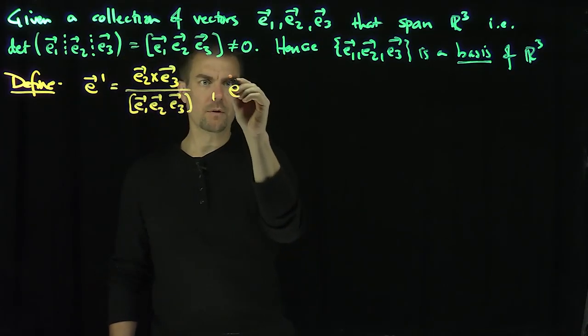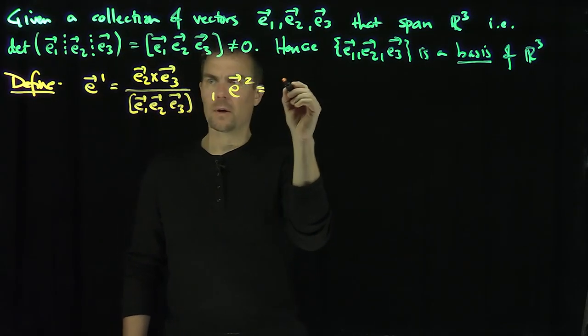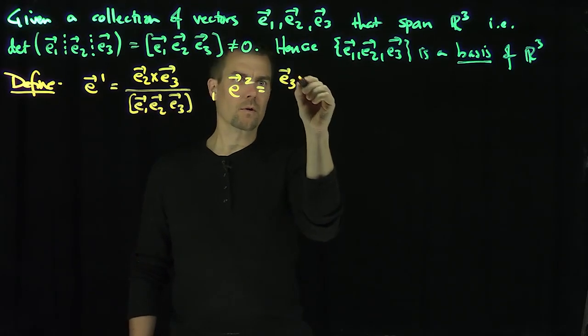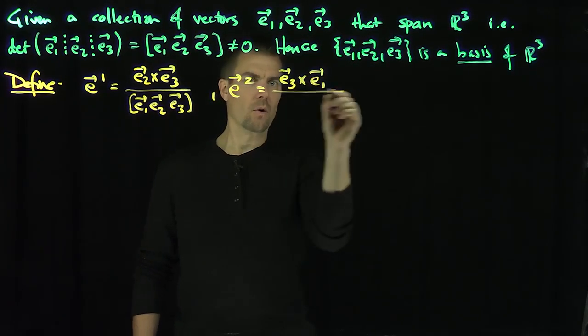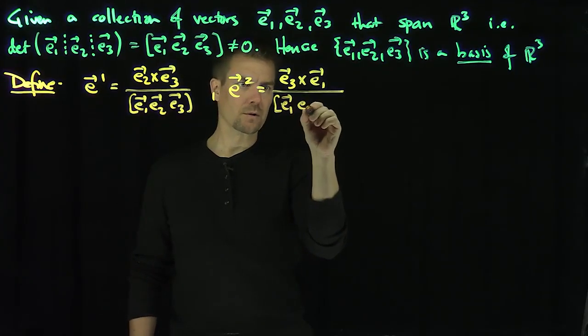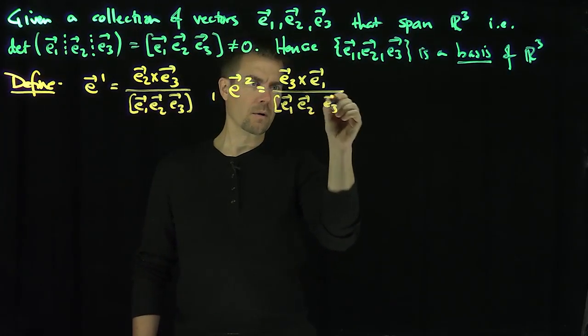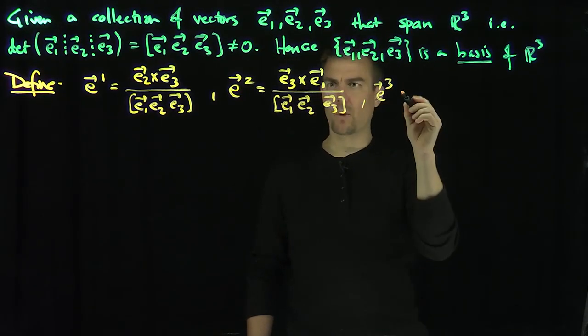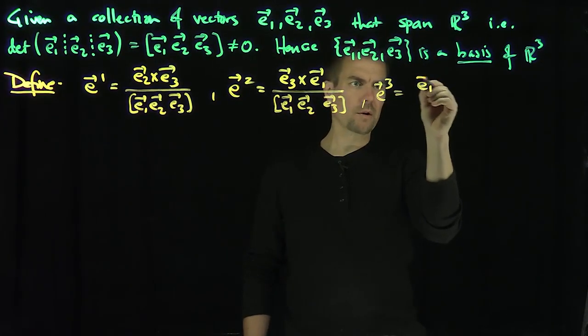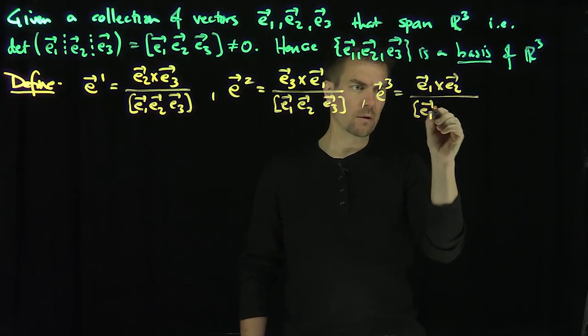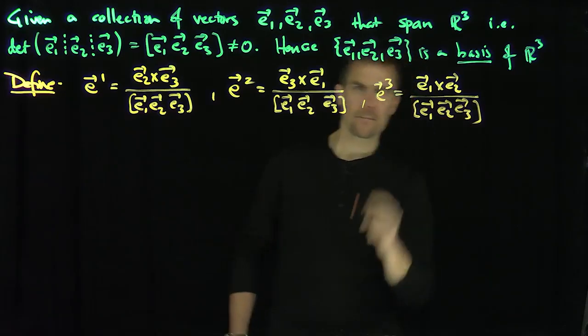E2 upper is going to be E3 cross E1 over this determinant E1, E2, E3 lowers. And then finally, E3 upper is going to be E1 cross E2 lower over E1, E2, E3, like that.